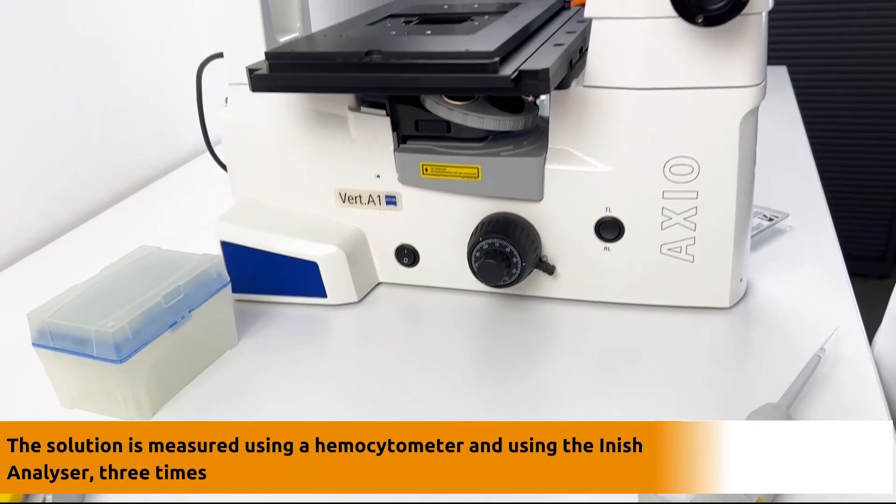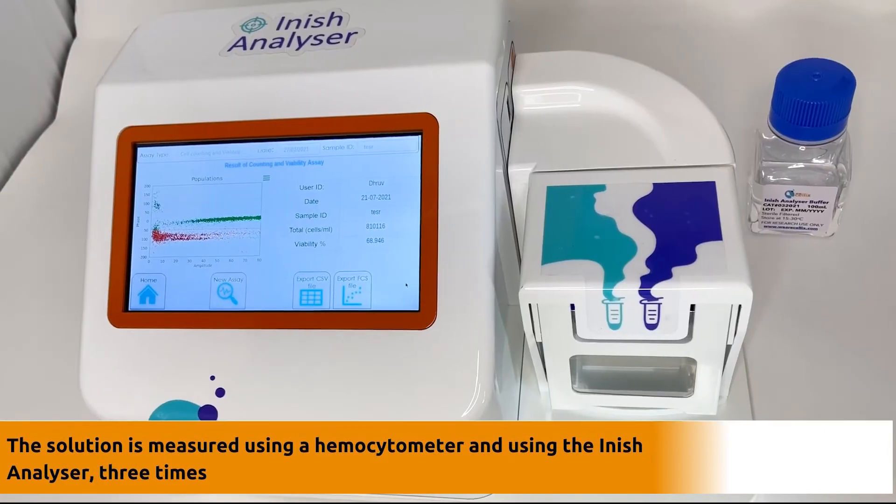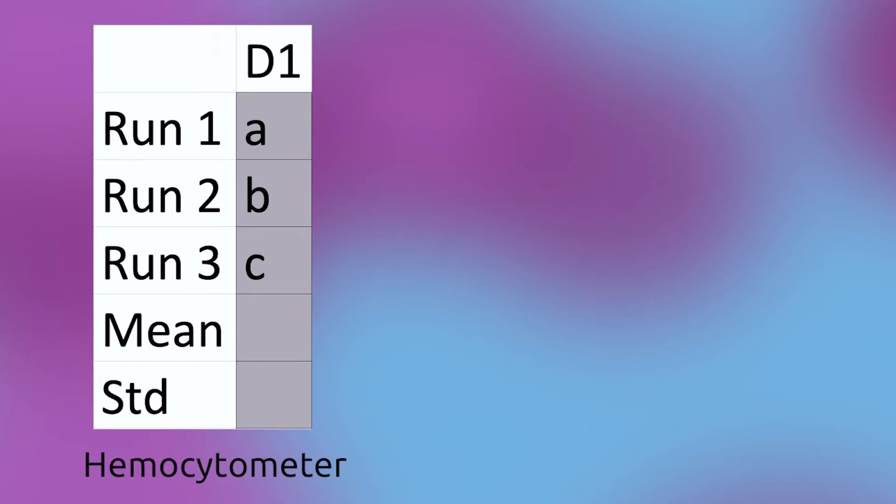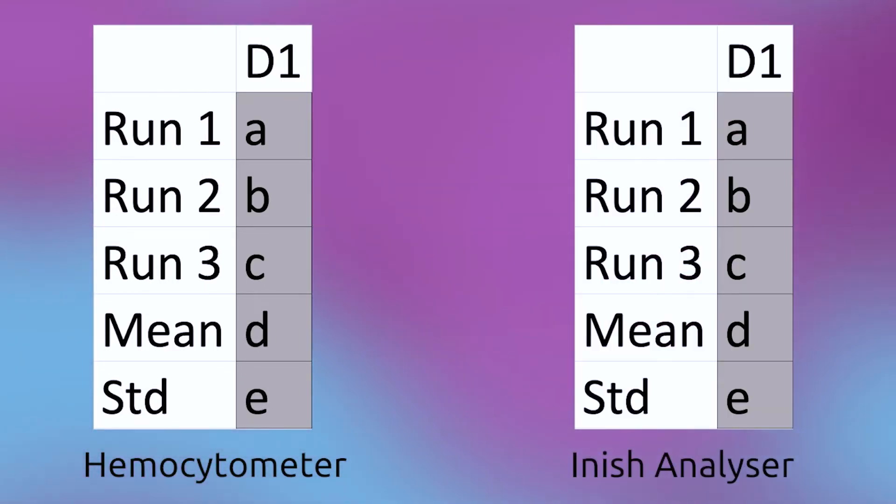D1 is then measured using a hemocytometer and using the Inish analyzer three times. We're measuring the concentration at least three times to calculate both the mean and the standard deviation of the measurements for a rigorous comparison.